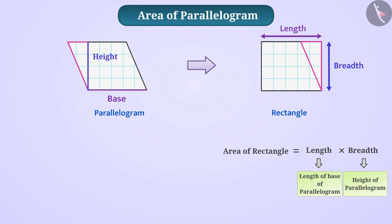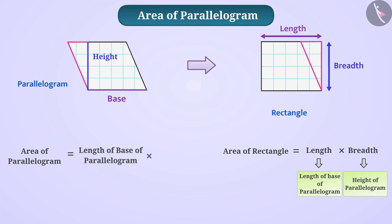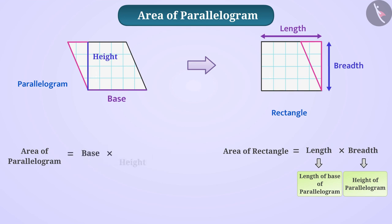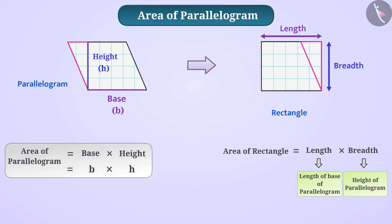Therefore, we can say that area of parallelogram is equal to length of base of parallelogram multiplied by height of parallelogram, or area of parallelogram is equal to base multiplied by height. If we consider length of base of parallelogram as b and height of parallelogram as h, then we can write area of parallelogram is equal to base multiplied by height. With the help of this formula, we can easily find out the area of parallelogram.